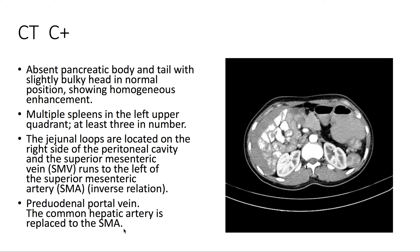On the CT with contrast, we see that there's an absent pancreatic body and tail with a slightly bulky head in normal position with homogeneous enhancement. There are also multiple spleens in the left upper quadrant, and we see that the jejunal loops are located on the right side of the peritoneal cavity.